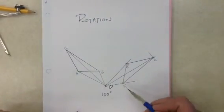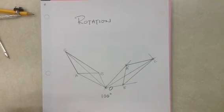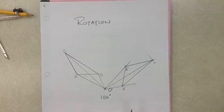And there we go. Triangle A prime, B prime, C prime is rotated 100 degrees from the original triangle ABC. Thank you.